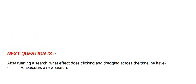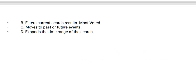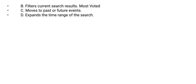Next question is: after running a search, what effect does clicking and dragging across the timeline have? Options are: Option A: Executes a new search. Option B: Filters current search results, most voted. Option C: Moves to past or future events. Option D: Expands the time range of the search. The correct option is Option B.